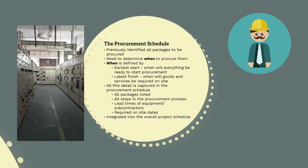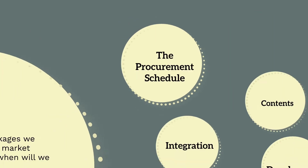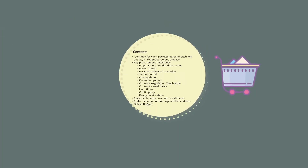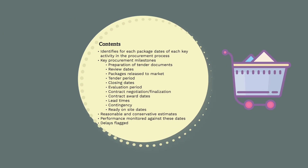The procurement schedule needs to be integrated into the overall project schedule to ensure that procurement does not cause delays. Basically, the procurement schedule covers all the dates for each key activity in the procurement process. These key procurement dates are: when preparation of the tender documents begins, when tender packages are to be reviewed, when packages are to be released to the market, the tender period, the tender closing date, the tender evaluation period, a period of time to finalise a negotiated contract, a contract award date, lead times of goods and services, any contingency, and the dates the goods and services are required on site.